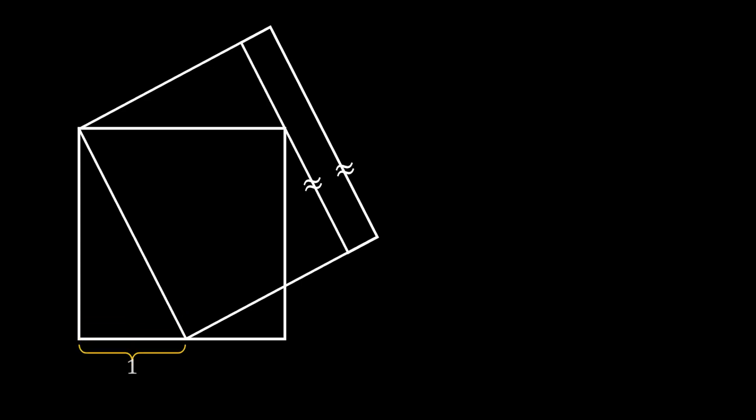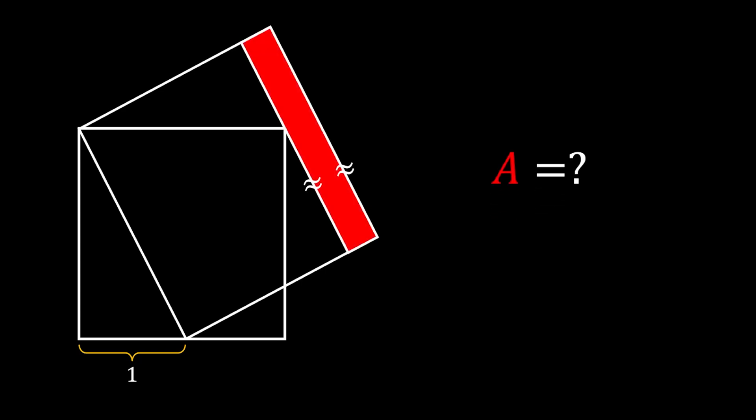the upper right corner of our smaller square. If the distance between the bottom left corner of our small square and the bottom left corner of our big square is equal to 1, is it possible for us to find the area of this shaded red rectangle? If you want to try this problem for yourself, this would be a great time to pause the video and then come back to see the solution.